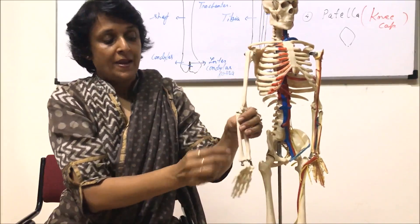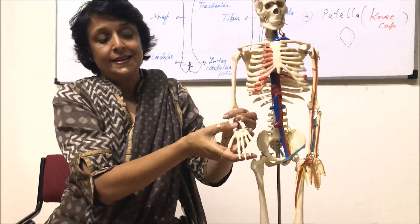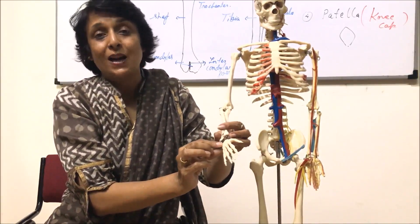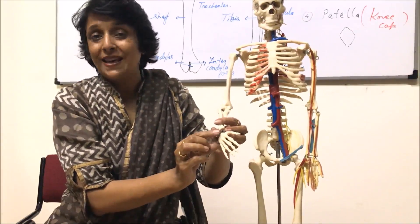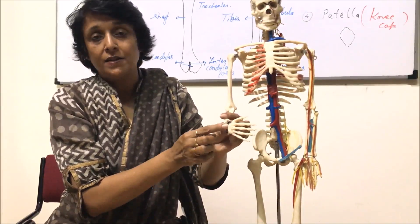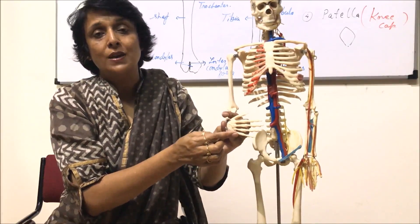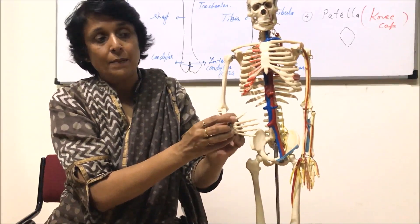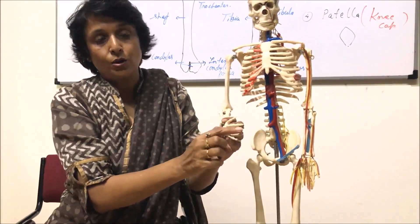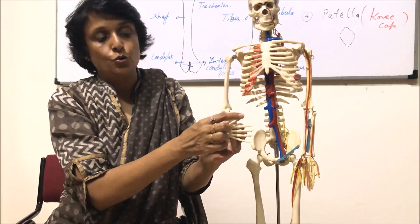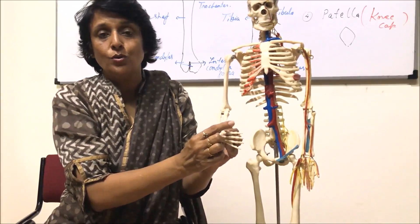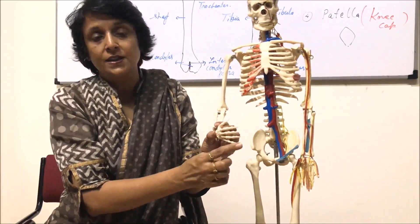These are the two forearm bones: the radius, towards the thumb side, and the ulna. Coming to the hand part — this is the wrist region, which contains eight bones known as carpals, arranged in two rows of four each. In the palm region the bones are known as metacarpals. For the phalanges: in the thumb there are two, and in the index, middle, ring, and little fingers there are three each, giving a phalangeal formula of 2-3-3-3-3.